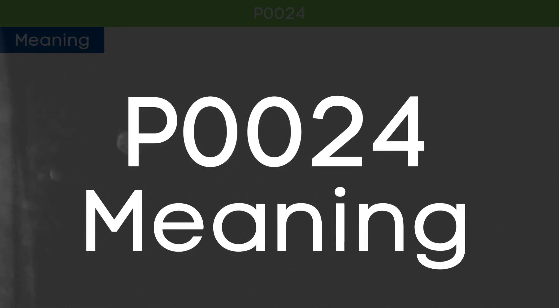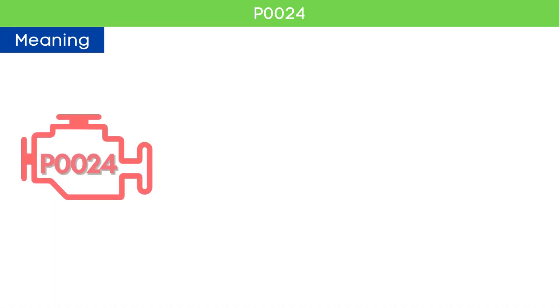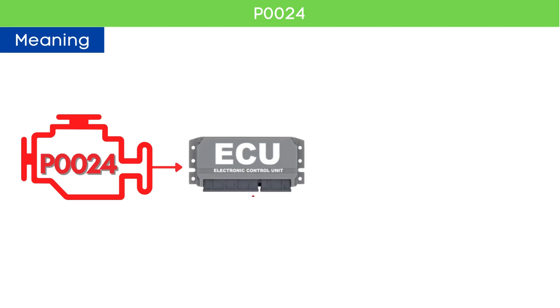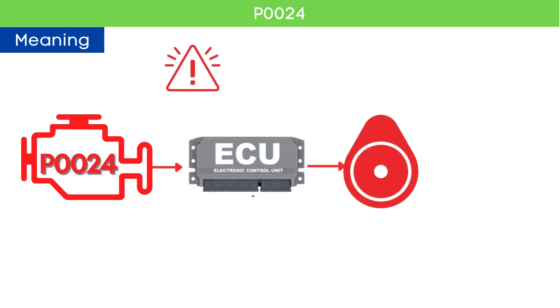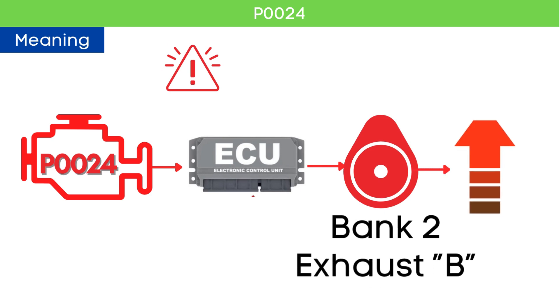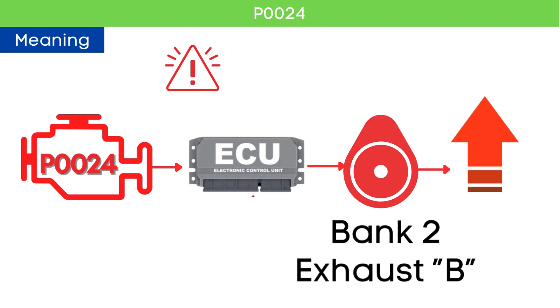The P0024 code indicates that the ECM has detected that the camshaft timing for bank 2, specifically the exhaust camshaft, is over-advanced.